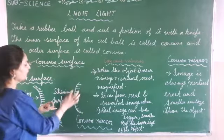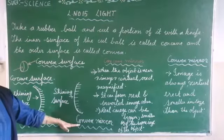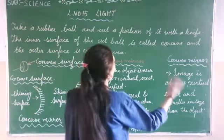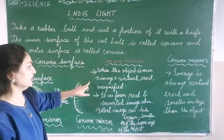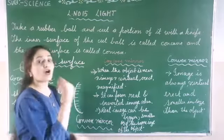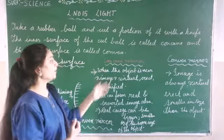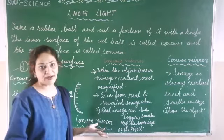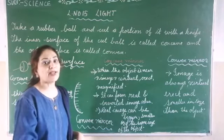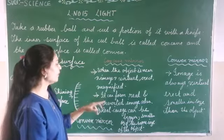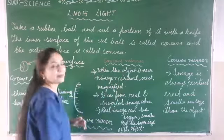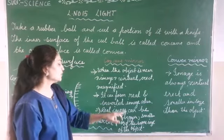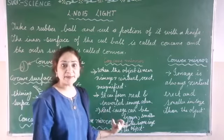What is the outer pole? This is the shining surface of convex. And the inner surface is the shining concave surface. So what does a concave mirror show? When the object is near: image is virtual, erect and magnified. When the object is far, the image can also be real and inverted. Real image can be bigger, smaller or of the same size as the object.